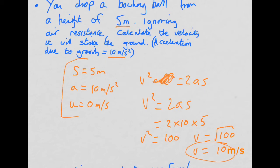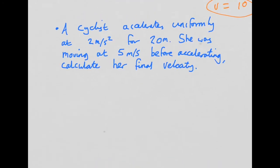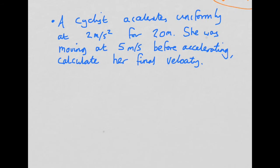So it's always quite good to write out all the things you know. And then you can see what equation involves all these things here. And then that's this equation. So we can plug all the numbers into the equation and eventually you'll get V equals 10. So looking at a slightly different calculation here. Cyclist accelerates uniformly at 2 meters per second. So our acceleration is 2 meters per second squared. And does it for 20 meters. So S, our distance, is 20 meters.